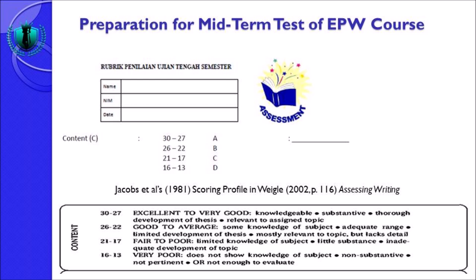Yang nilai 22 hingga 26 atau B itu good to average: some knowledge of subject, adequate range, limited development of thesis, mostly relevant to topic but lacks detail. Jadi bedanya adalah berkaitan dengan topik tapi detailnya kurang, serta agak terkesan tahu dengan subject yang ditulis tapi tidak terlalu mendalam. Untuk dapat nilai C, fair to poor: limited knowledge of subject — kurang pemahaman tentang subject.